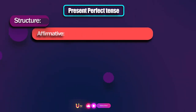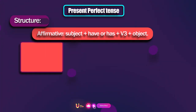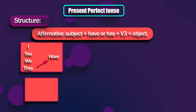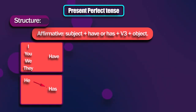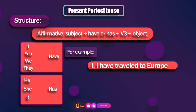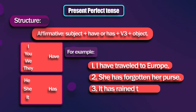Now let's learn about the structure of present perfect tense. To form an affirmative statement, we put subject plus auxiliary verb 'have' or 'has' plus third form of verb plus object. It's important to know how to use 'have' or 'has': I have, you have, we have, they have — but third person singular comes with 'has', such as he has, she has, it has. For example: I have traveled to Europe. She has forgotten her purse. It has rained twice this week.